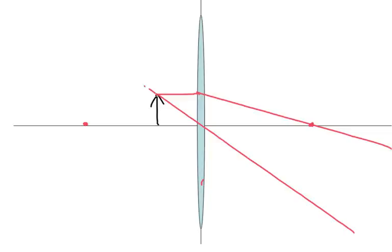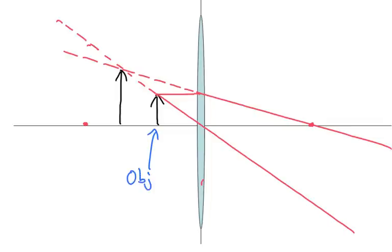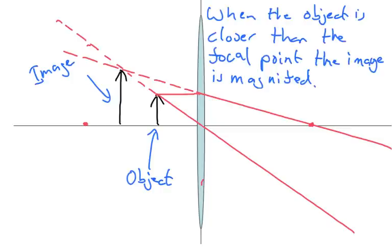If we work backwards to see where it appears the light has come from, where the lines meet we'd see our image. So this is our object here and this is our image — as you can see, this has caused magnification. When the object is closer than the focal point, the image becomes magnified. It's important to note that this image is a virtual image and it can't be projected on a screen.